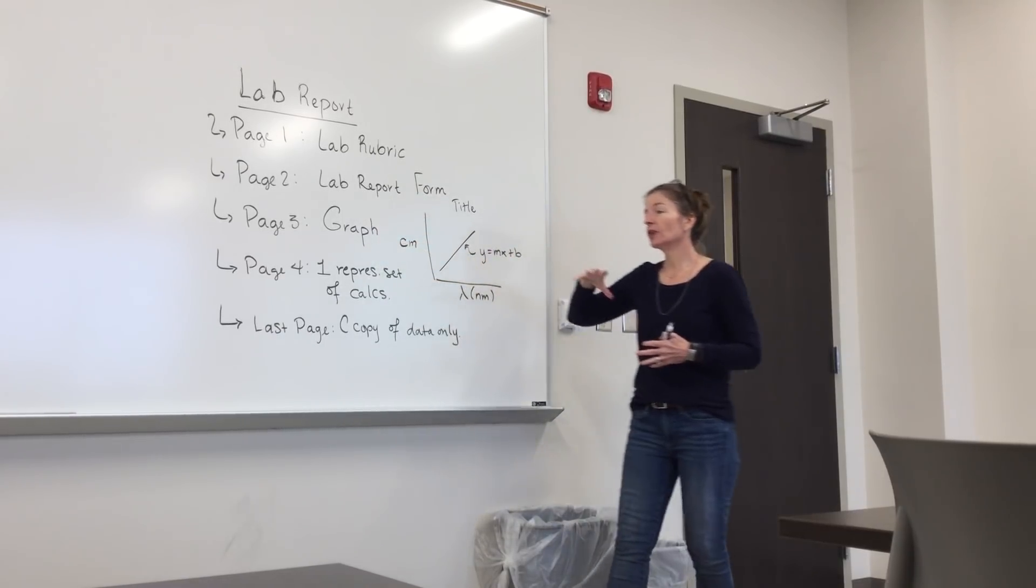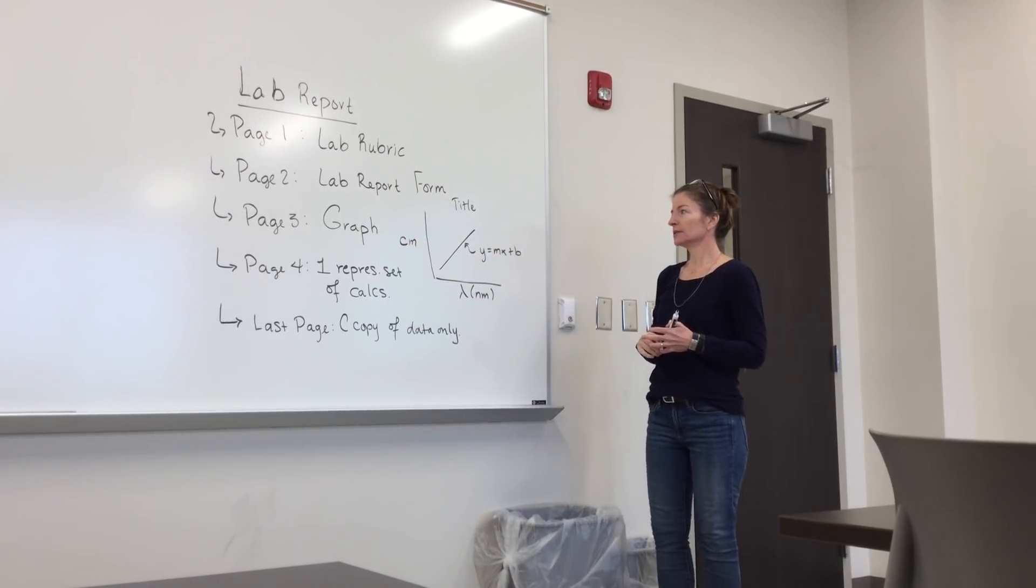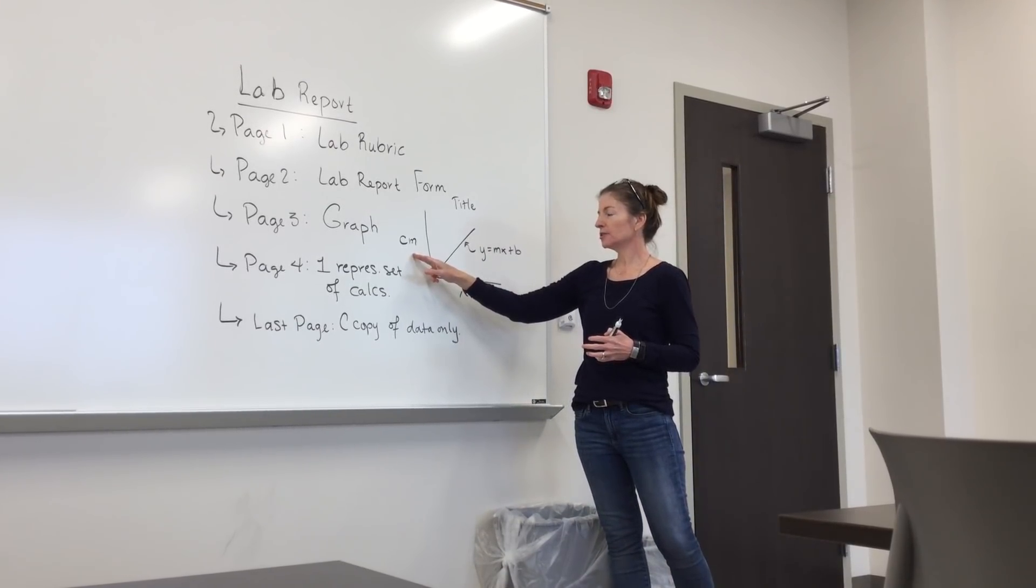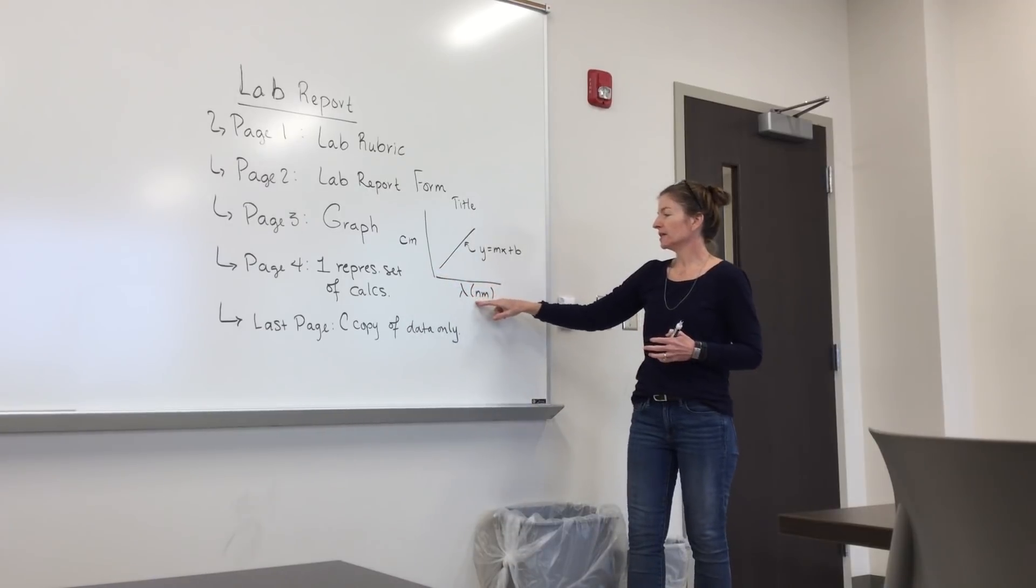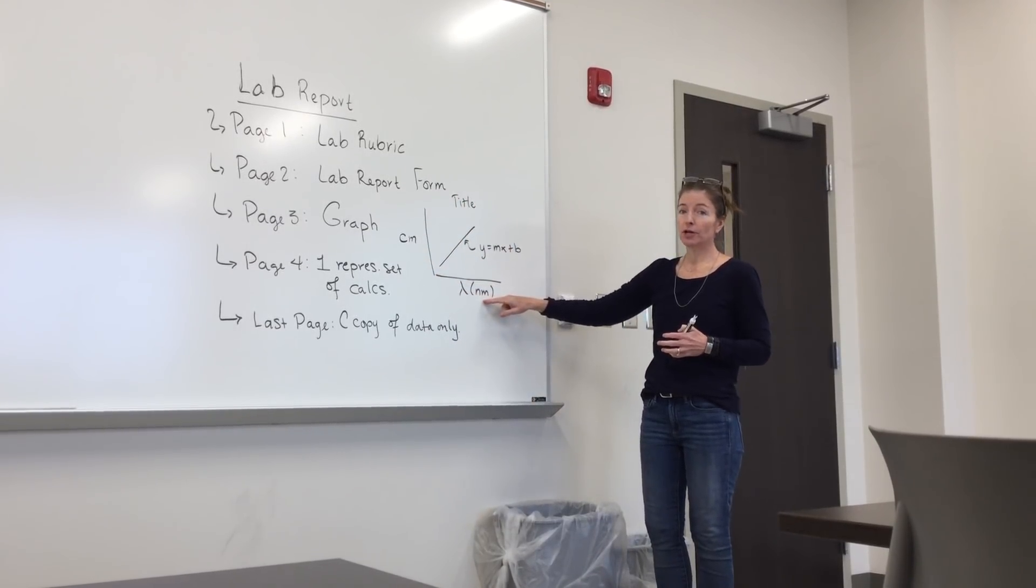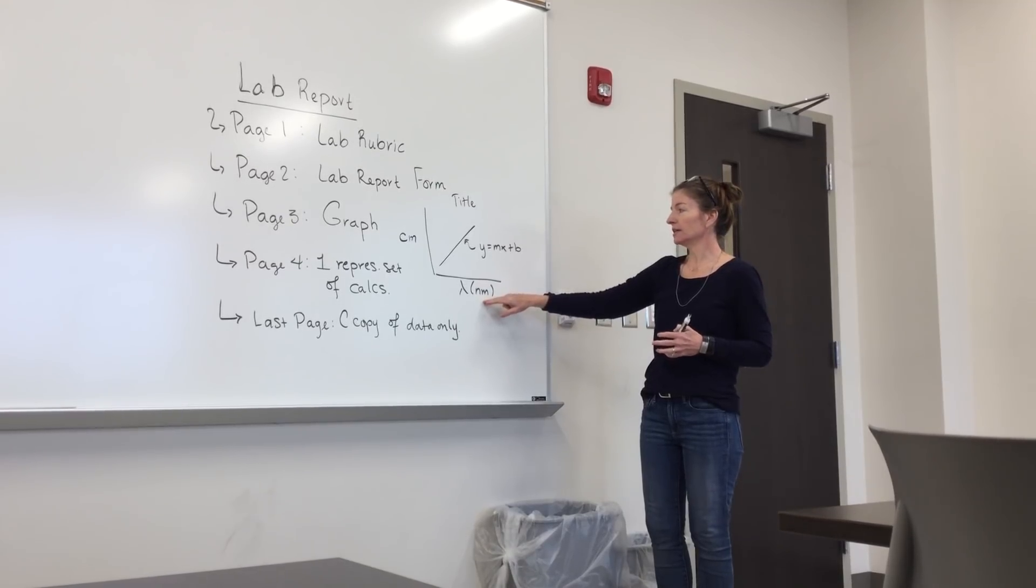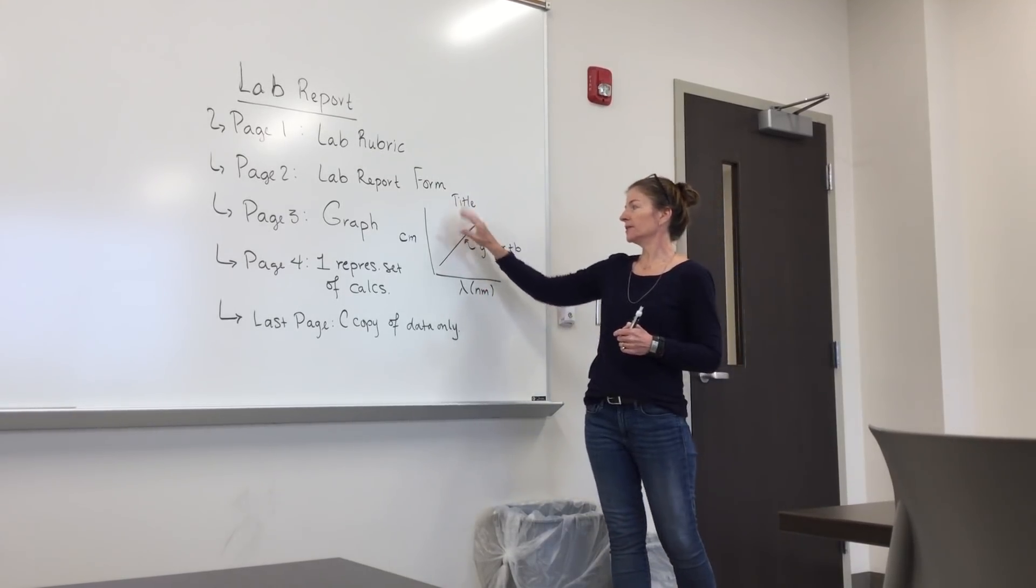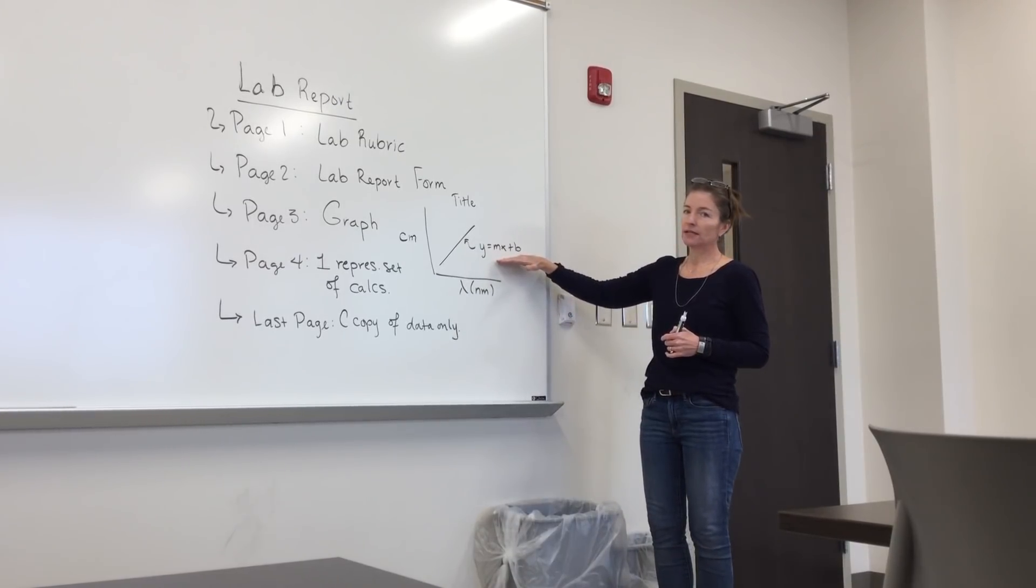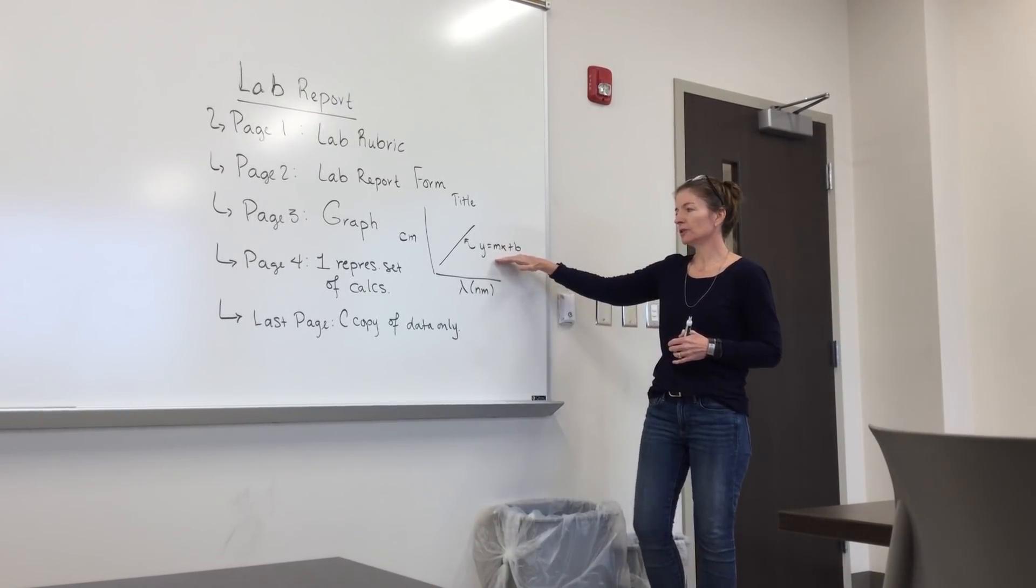On page three, you'll have a graph that's computer generated. This one's a little different. You're going to have on the y-axis the centimeters that you've been reading off the spectroscope, and then wavelength in nanometers. And this graph is based off of the mercury lamp. It should be linear and you're going to have a y equals mx plus b. So you'll have a trend line for that.